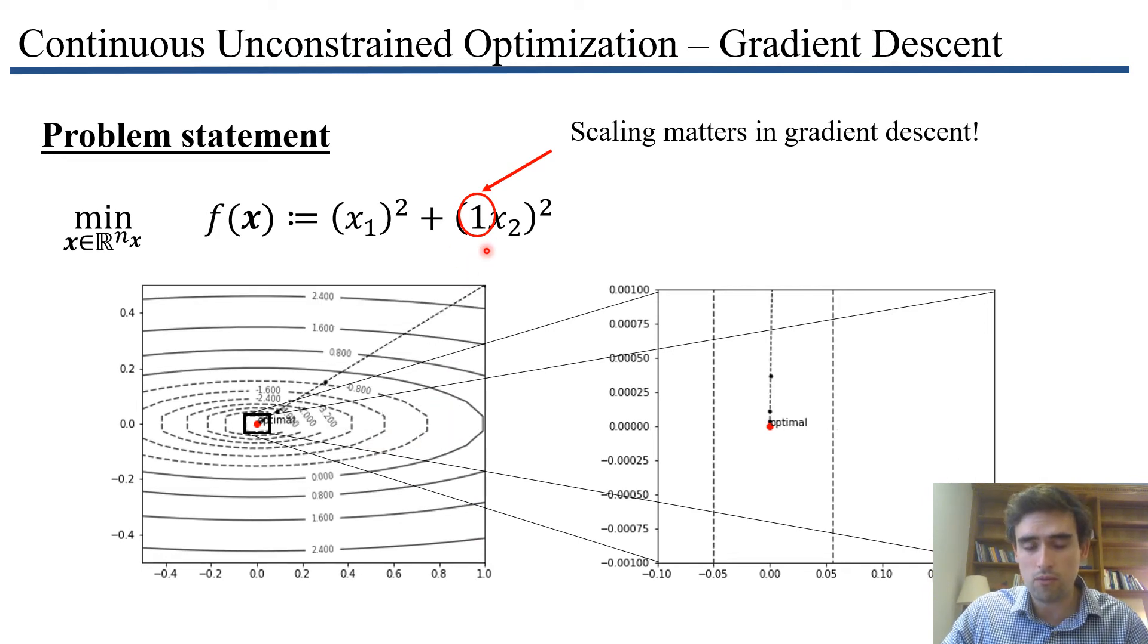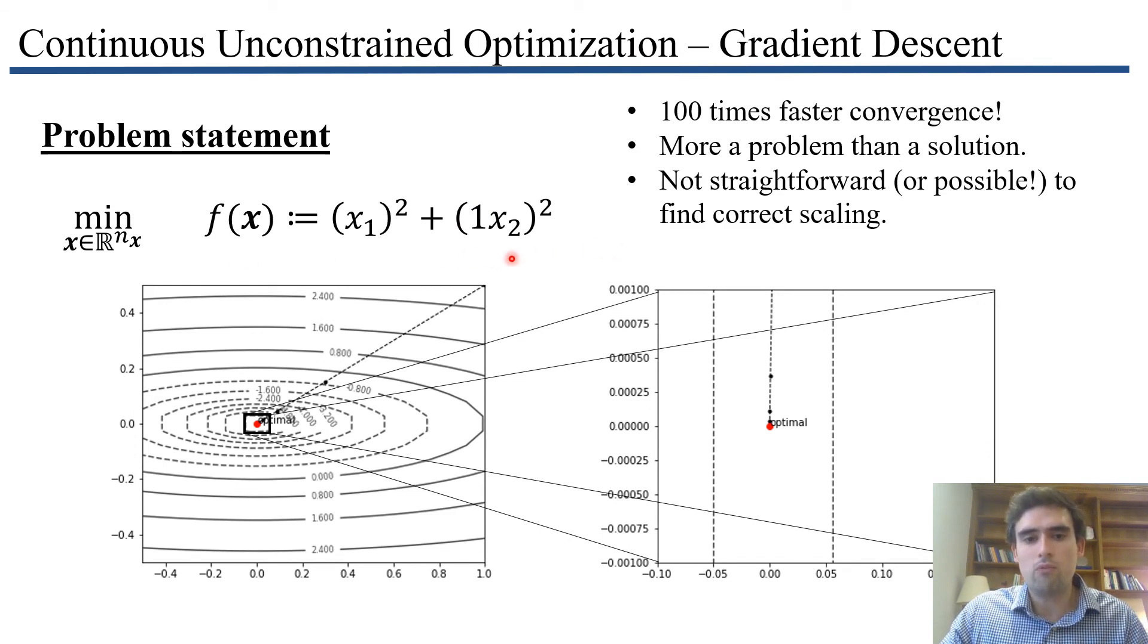If here, instead of 5 which becomes 25, we put a value of 1, then we see our algorithm stops oscillating and we reach the maximum much faster. This is what we call scaling. The scale is correct. A function that varies much more in one direction than another, we can say it's ill-conditioned, or has a lot of scaling, or is badly scaled. When we remove that scaling, this algorithm becomes much faster.